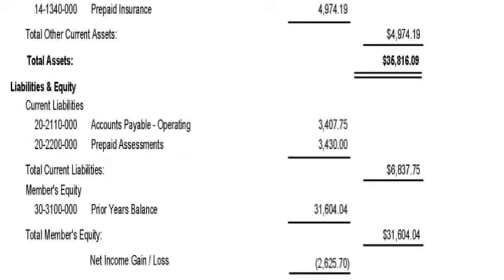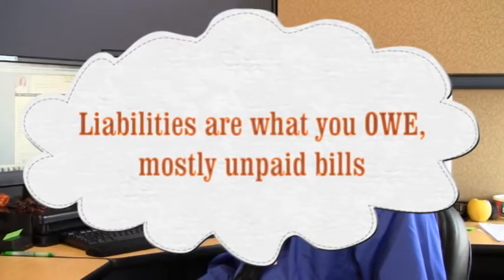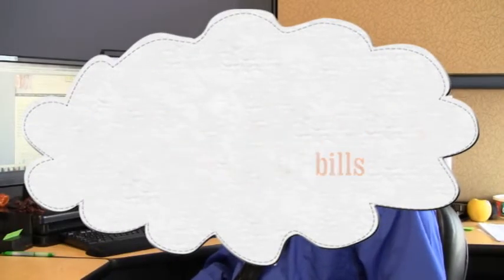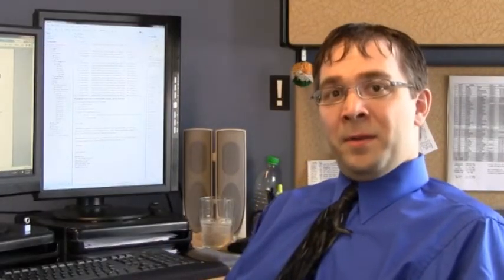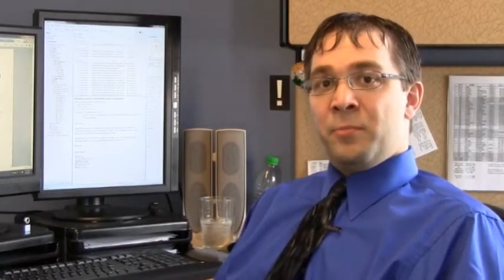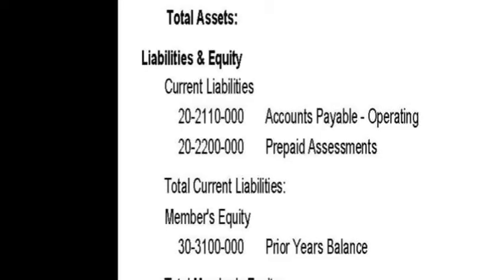Beneath the assets is where the liabilities are listed. The most common liability an association is going to have is accounts payable — these are bills for expenses in the month the balance sheet is reporting on that have not yet been paid. Another liability in this section is prepaid homeowner assessments, which are recorded as a liability because the association technically hasn't earned these assessments since they're for future periods.